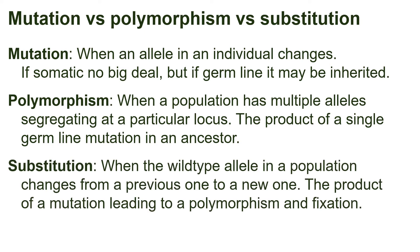Finally, substitution. A substitution is when the wild-type allele in a population changes from an original one to a new one. This term is used to describe when the standard allele for a population has changed. Of course, this new allele is the product of a single mutation which led to a polymorphism in which the allele increased in frequency to fixation — 100%, or more technically, a frequency or proportion of one.